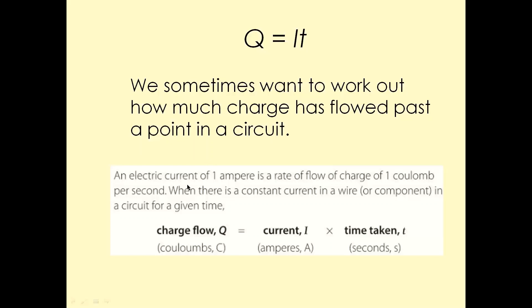The electric current of one amp is the rate of flow of charge of one Coulomb per second. When there is a constant current in a wire in a circuit at a given time. Don't worry much about this definition. As long as you know the relationship, as long as you know the formula, you'll be fine. And this formula is also given to you on the formula sheet as well. So all you need to know is just plug the values in the calculator and get the answer.